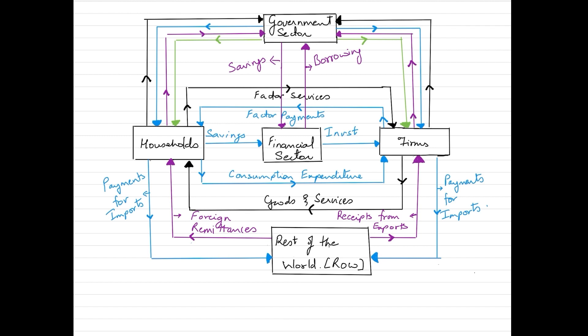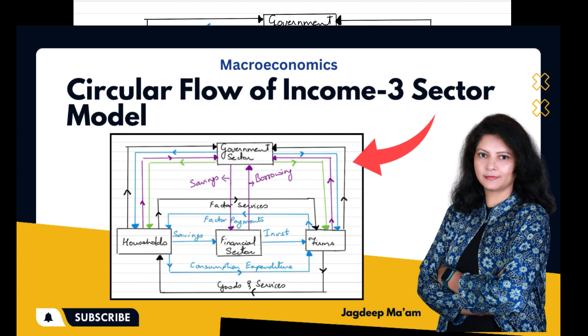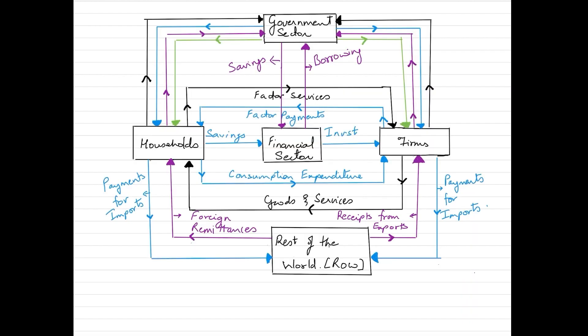Let's take a look at the explanation and diagrammatic representation of the four-sector model. This is how the circular flow of income in a four-sector model would be depicted. We have four sectors: households, firms, government, and the rest of the world. There are individual videos on this channel for the two-sector and three-sector models. In the four-sector model, households and firms deal with the rest of the world.